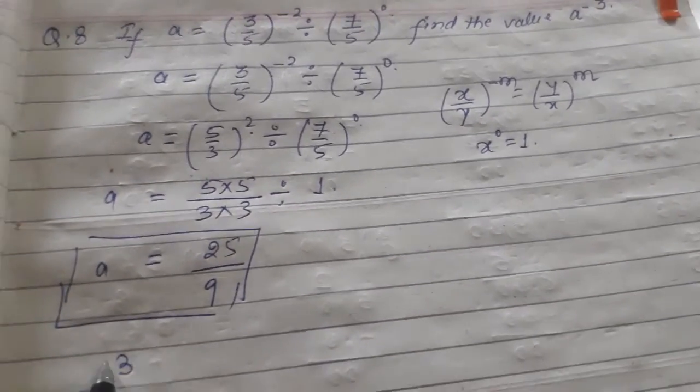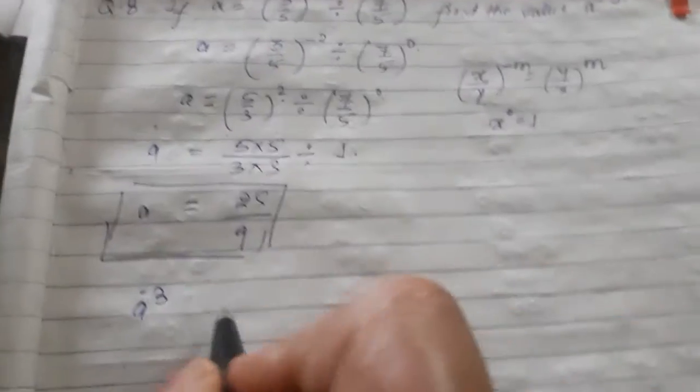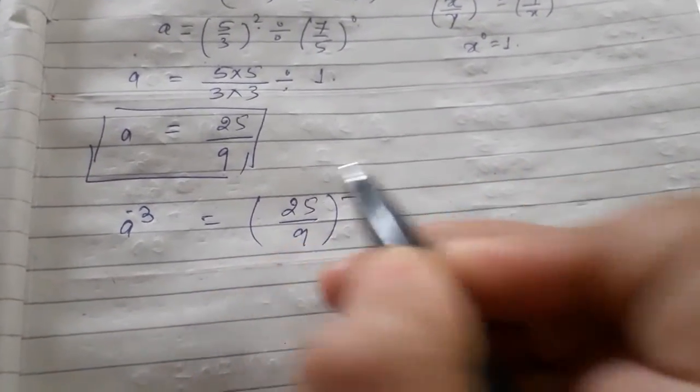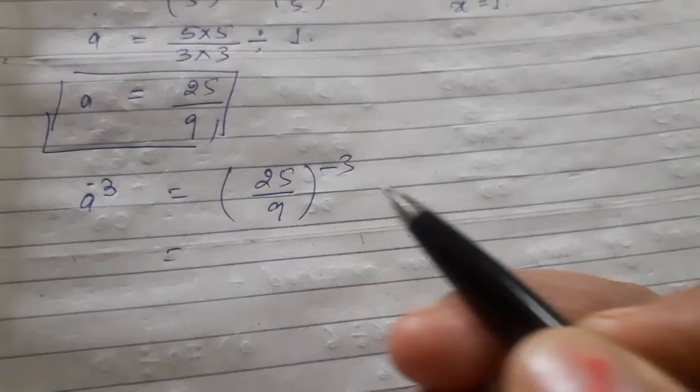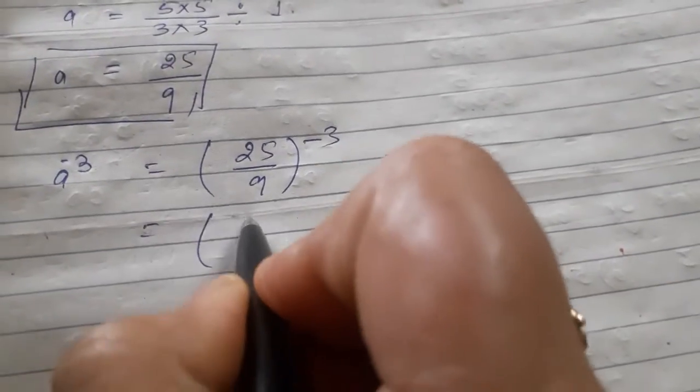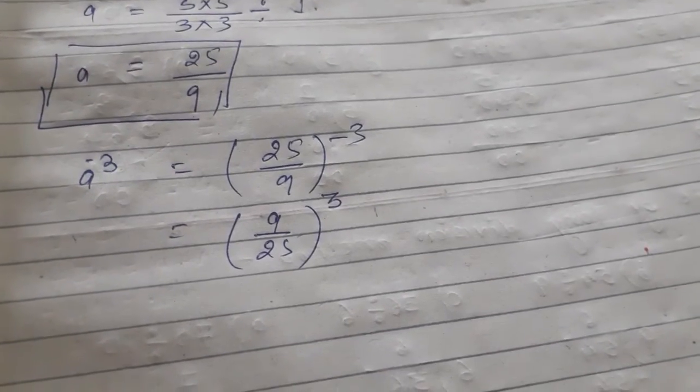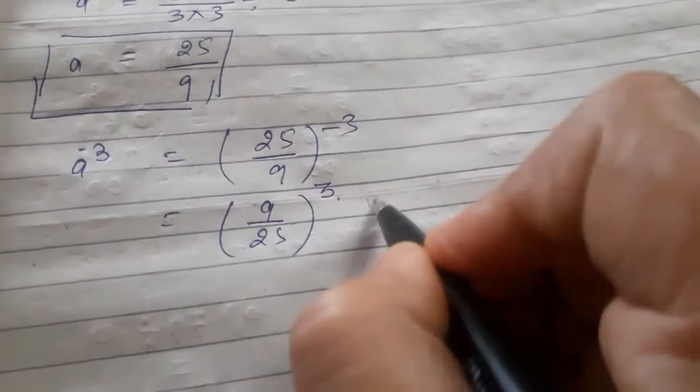And now we have to find out a^-3. a^-3, so we have given 25/9 the power of minus 3. In minus 3 we cannot do any calculation, so we will convert it to plus. So it will be (9/25)^3.